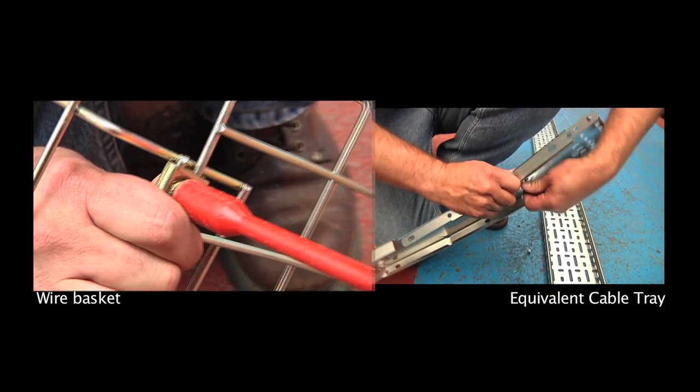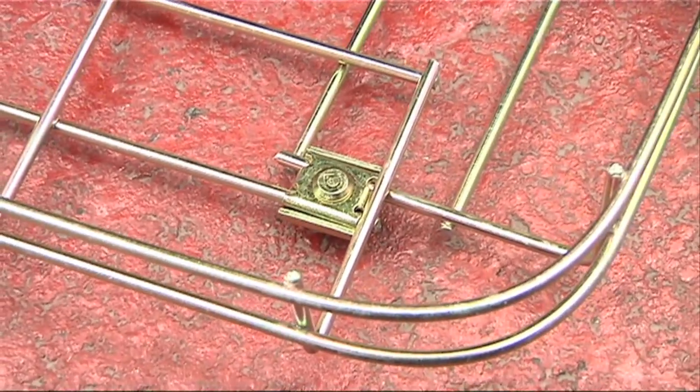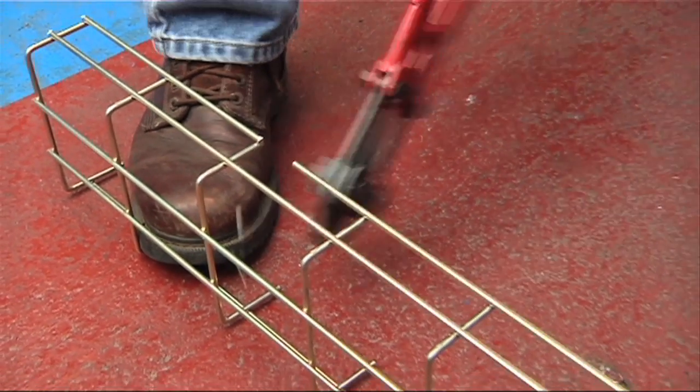Cable tray requires four nuts and bolts to create the same shape. Using wire basket proved to be much quicker and of course I didn't need any additional sections or parts.